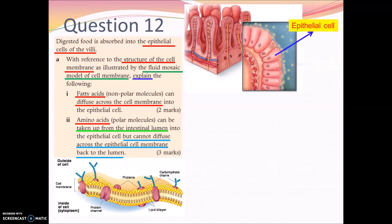Epithelial cells are like other normal cells with the same membrane, cytoplasm, nucleus, and so forth. Importantly, there are a large amount of mitochondria in the epithelial cells — I'll explain why later.